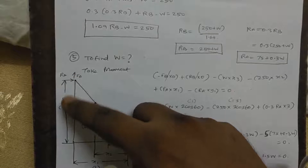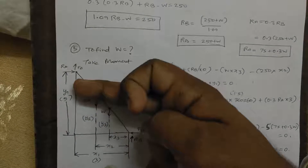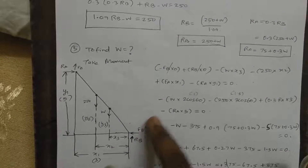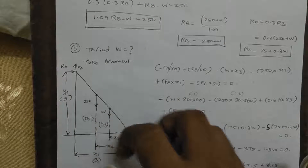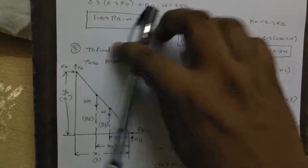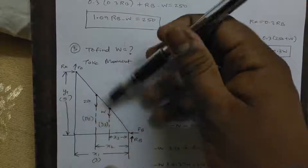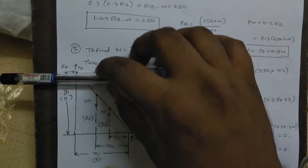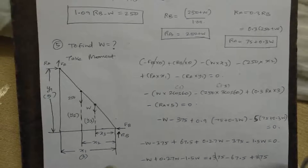Taking the moment about B, with 0.3 into W and 250. The top edge covers distance x3, center of gravity of 250 covers distance x2, and the topmost angle covers distance x1. Taking moment about B: RB and FB are zero. Minus W into x3, minus 250 into x2, plus FA into x1 equal to zero.